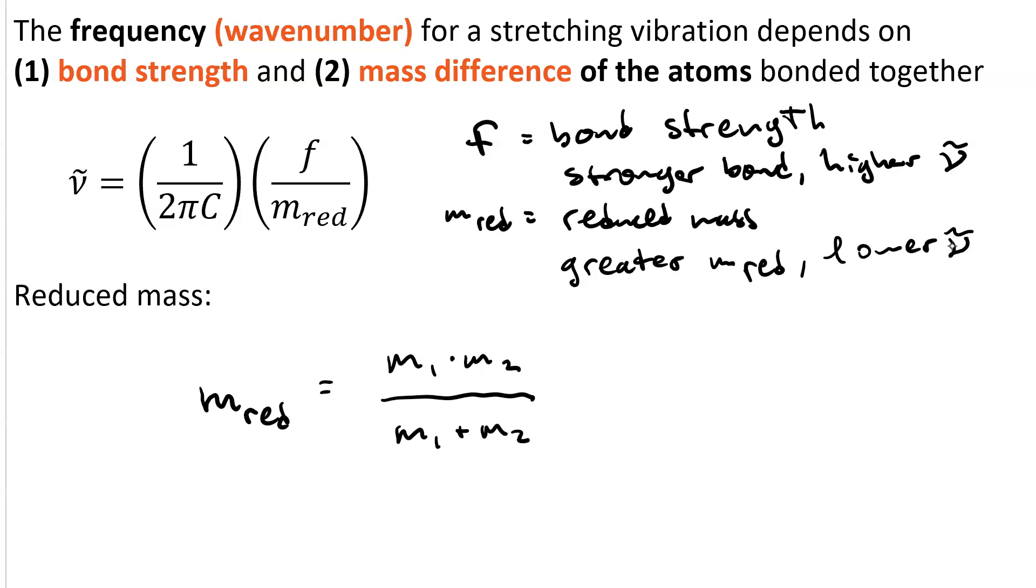Where these represent the masses of the atoms that are vibrating, that are stretching from each other. So you've got atom 1 bonded to atom 2. And they're stretching.